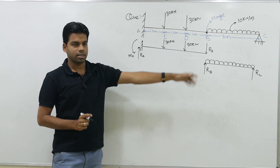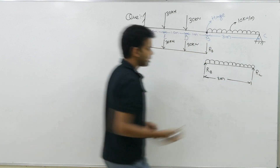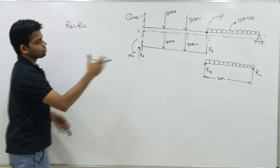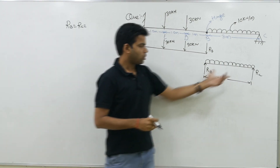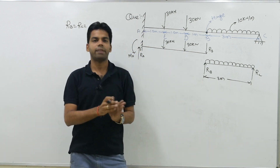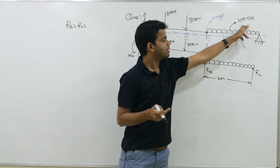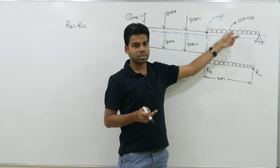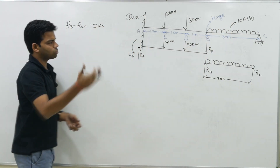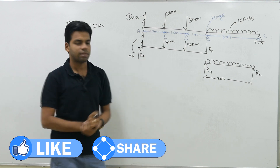Now how to determine RB and RC? This is a beam with symmetrical loading. For symmetrical loading, RB equals RC, which equals half of the total load. The total load is 10 kN/m × 3 m = 30 kN. So RB = RC = 15 kN.